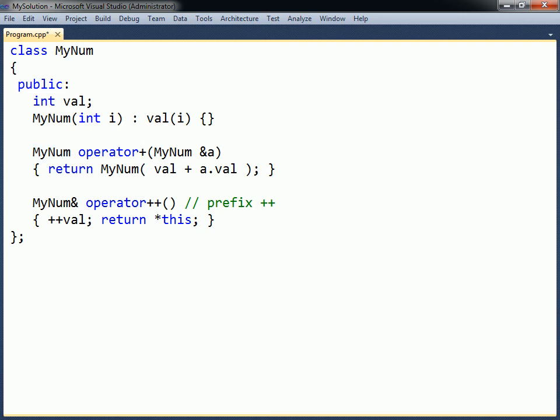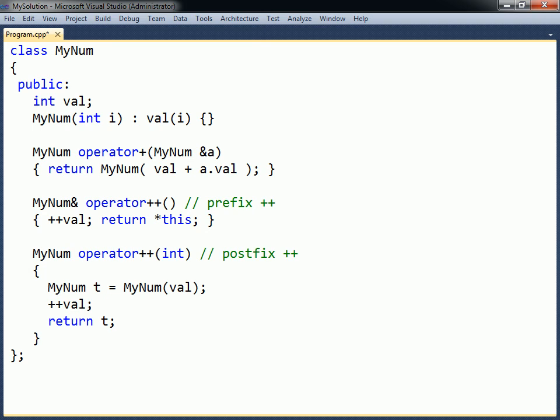Not all unary operators should return by reference. The two postfix operators, postincrement and postdecrement, should instead return by value, because the postfix operations are expected to return the state of the object before the increment or decrement occurs. Note that the postfix operators have an unused integer parameter specified to distinguish them from the prefix operators.